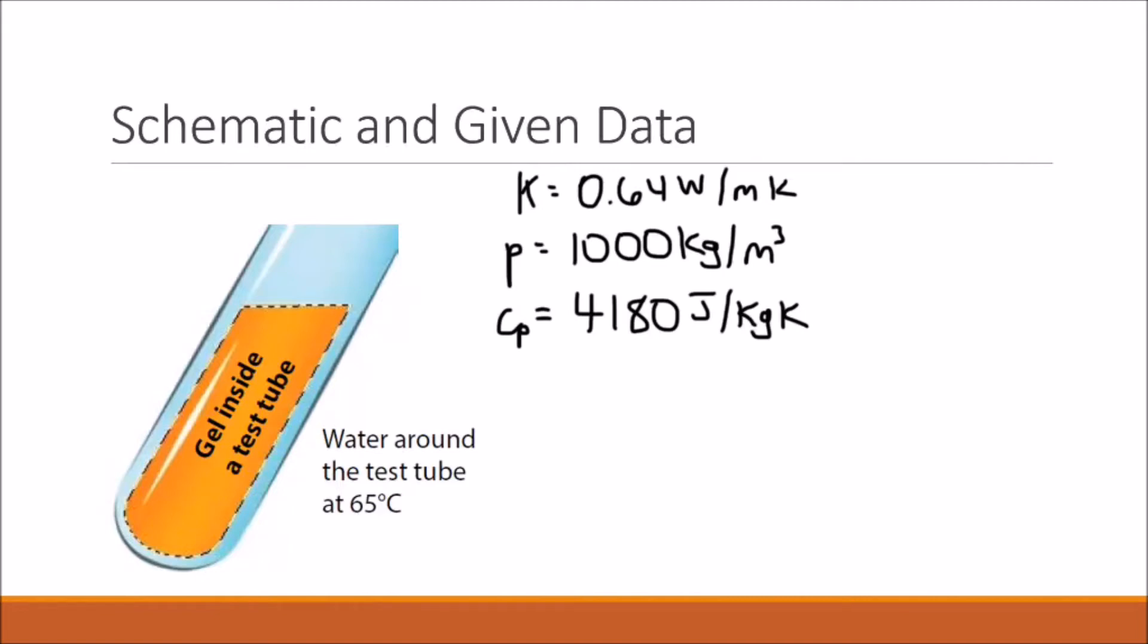In this problem, we're told that the tube's diameter is 1 centimeter. We're also told that the properties of the material are the same as water. So the thermal conductivity is 0.64 watts per meter kelvin, the density is 1,000 kilograms per meter cubed, and the specific heat is 4180 joules per kilogram kelvin.